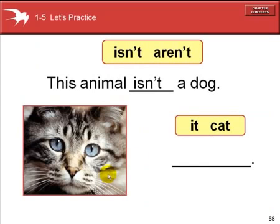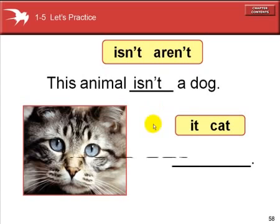This animal isn't a dog. It is not a dog. The apostrophe takes the place of the O. It's a cat. It is a cat.